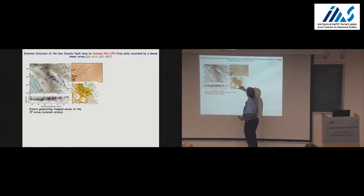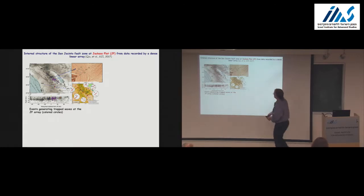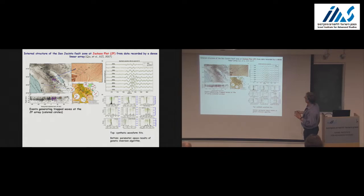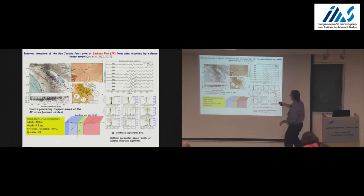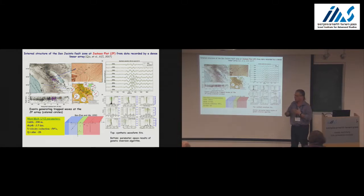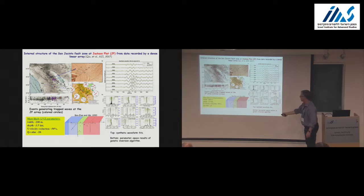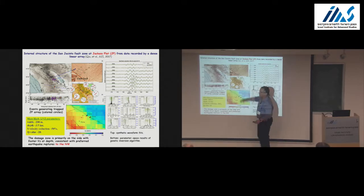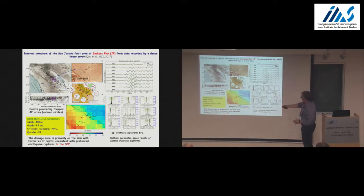Moving to another site in the southernmost part, we have another array. We record and model lots of resonance modes — trapped waves. Using a simple analytical solution in a genetic inversion algorithm, we get probability distribution functions of the parameters with clear peaks and best-fitting parameters. We conclude that the main fault is right here — meaning that almost all the fault traces mapped by geologists are actually in the damage structure. Again we have asymmetric structure on the stiff side, consistent with the prediction that rupture propagates to the northwest.